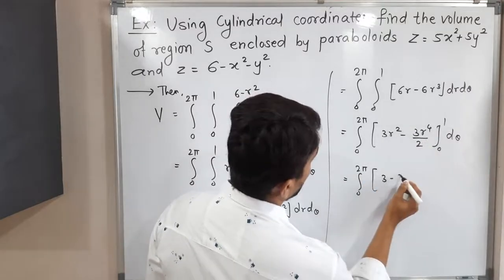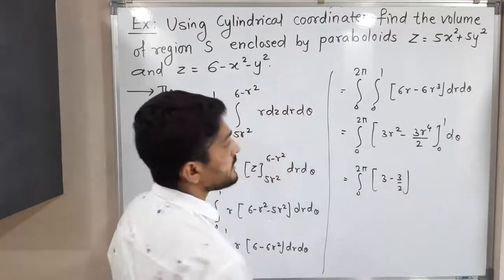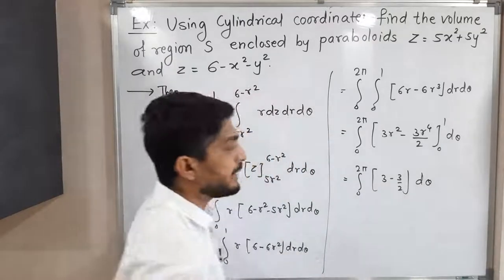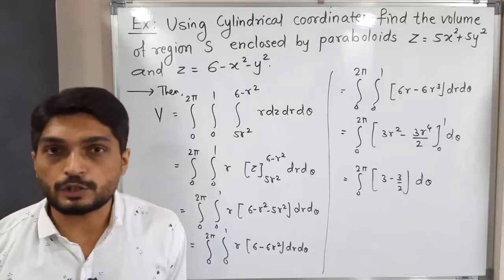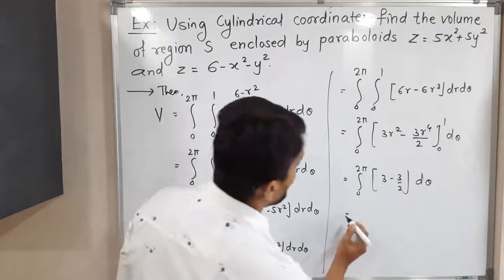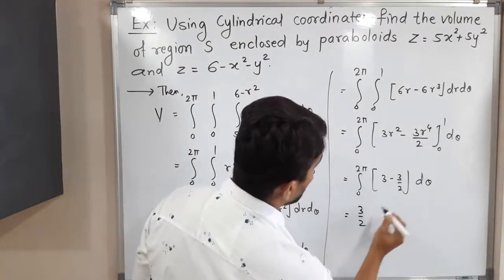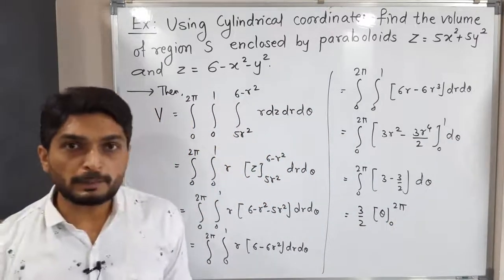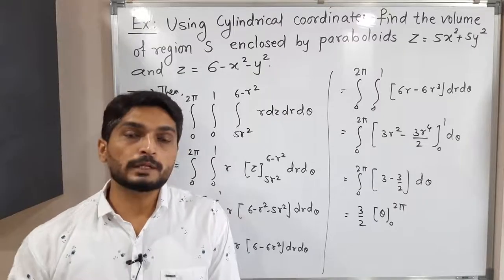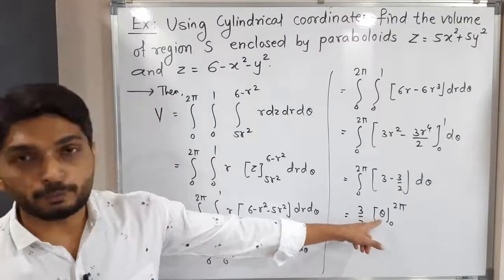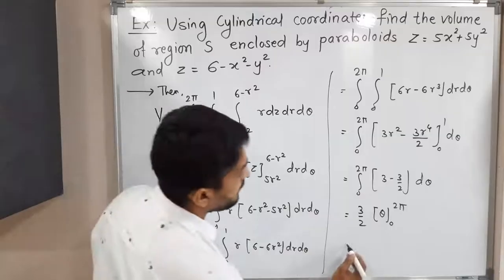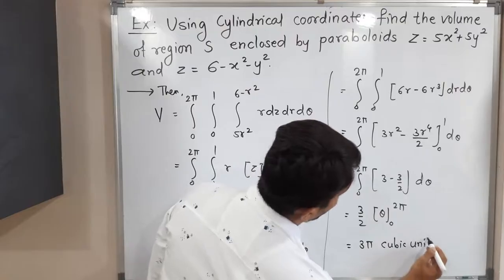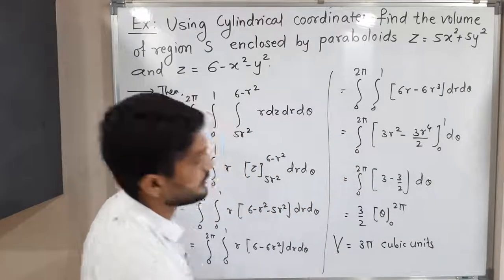Since 3/2 is a constant, it comes outside: (3/2) ∫₀²π dθ = (3/2)[θ]₀²π = (3/2)(2π). The 2's cancel, giving the final answer 3π. Since this is a volume, the answer is 3π cubic units.